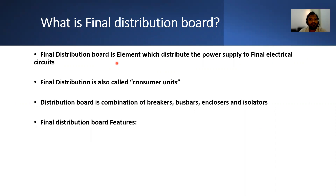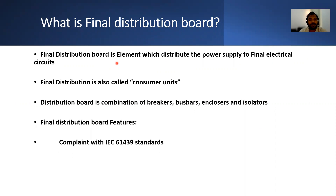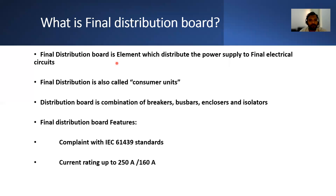Final distribution boards are compliant with IEC 61439 standards, with a current rating up to 250 amperes and a short circuit withstand capacity of 17kA for 200 milliseconds.